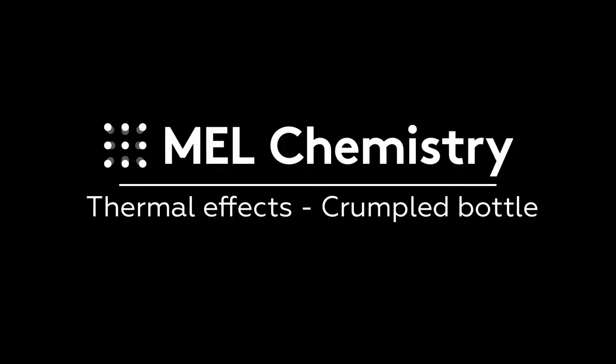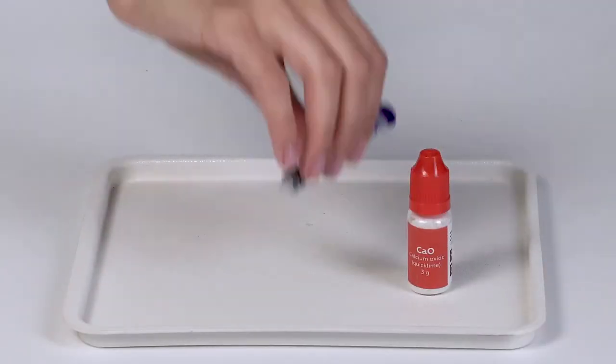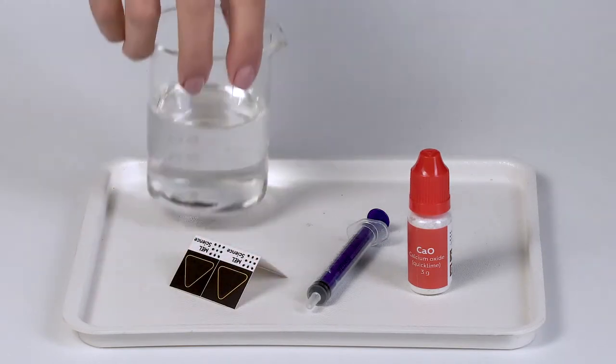For the crumpled bottle experiment, you will need a plastic tray, calcium oxide, a 5 ml syringe without a needle, a thermosticker, and water.